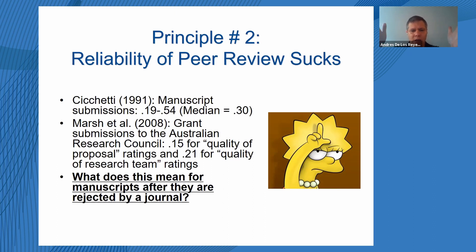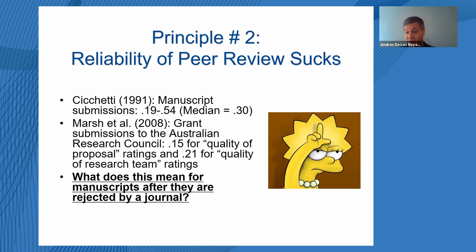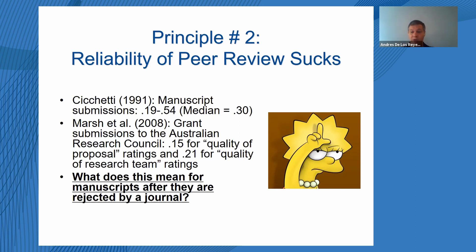Our peer review system in many respects just doesn't pass threshold on key metrics, namely precision. What that means for a rejected paper is different from a revise-and-resubmit. For a revise-and-resubmit, I advise people to move mountains to do everything the reviewer says, because the likelihood is very high that the same reviewer will review your next submission to that journal. You can't say that about reject decisions — we'll talk about that in more detail later.